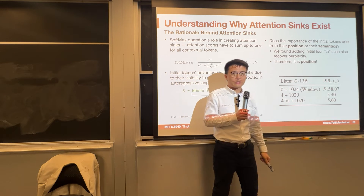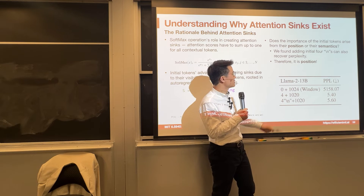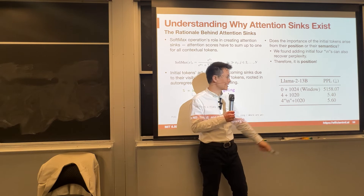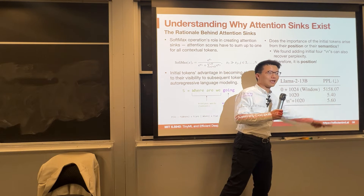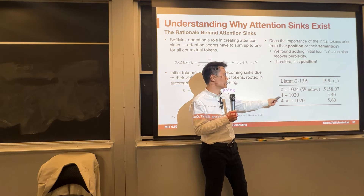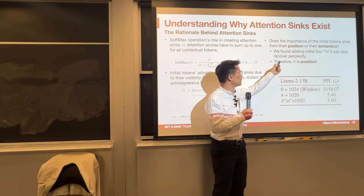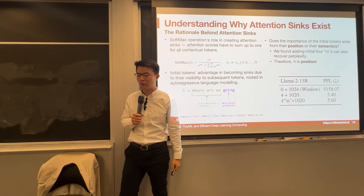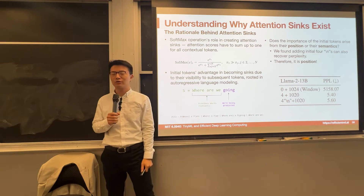We try to see whether it's the position that matters or the semantics that matters. So we try to replace the sink token with just a newline character '\n', which is a line break with no meaning. We find it performs almost as well as using the four original tokens as the attention sink — much better than having no attention sink at all — showing that position matters, not semantics. Even replacing with a line break still works.